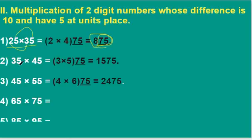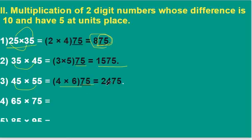Here, last two digits are 75 and 3 into the next number of 4, that is 5: 3 into 5 is 15, and 75 is appended, so our answer is 1575. Here, 4 into the next number of 5, that is 6, and last two digits are 75: overall our answer is 2475. See: 6 into 8 is 48, and last two digits are 75.